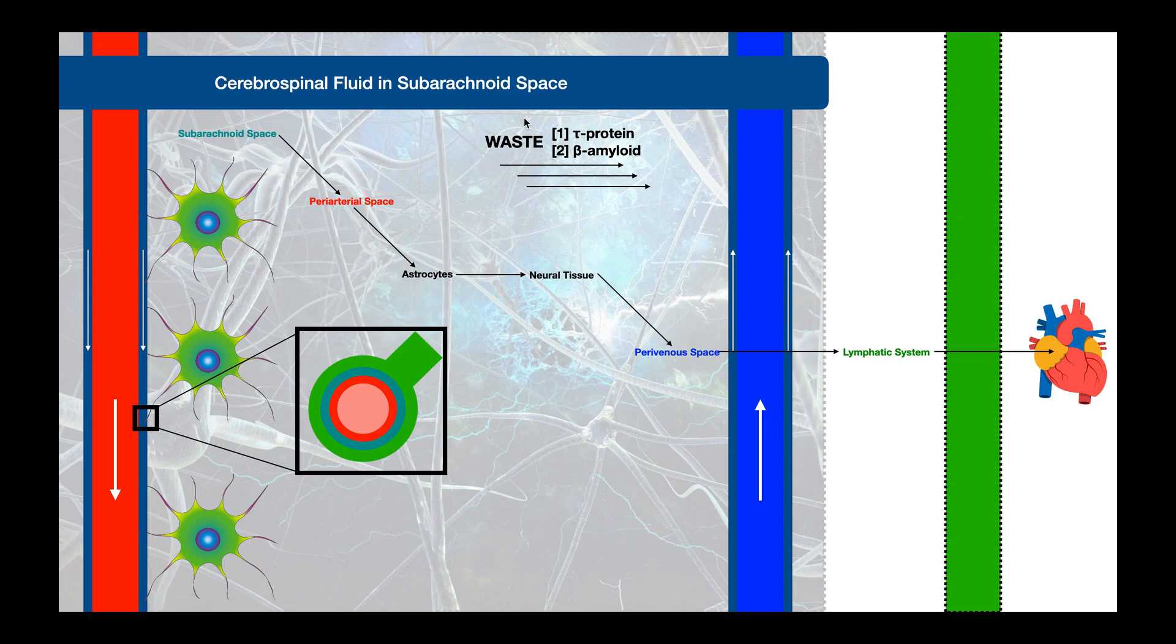There's one other application of this, and that's sleep. Some researchers investigated this, and it turns out the glymphatic system is actually more active during deep sleep. When you go to sleep at night, the glymphatic system is helping to get rid of these proteins from accumulating in the neural tissue. By doing that, it's helping to prevent Alzheimer's disease.